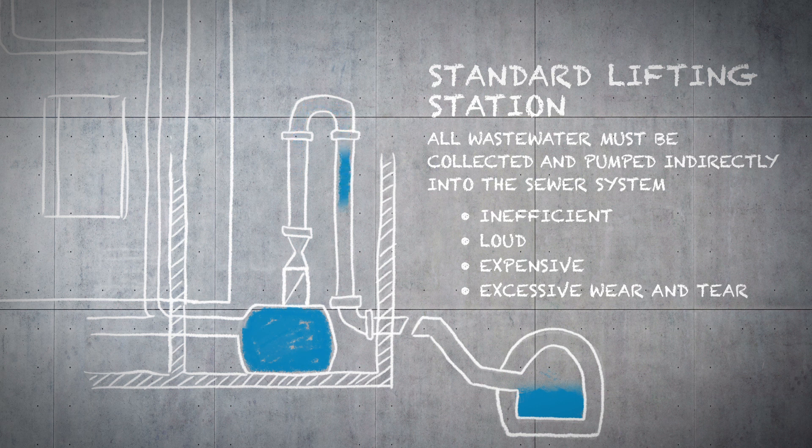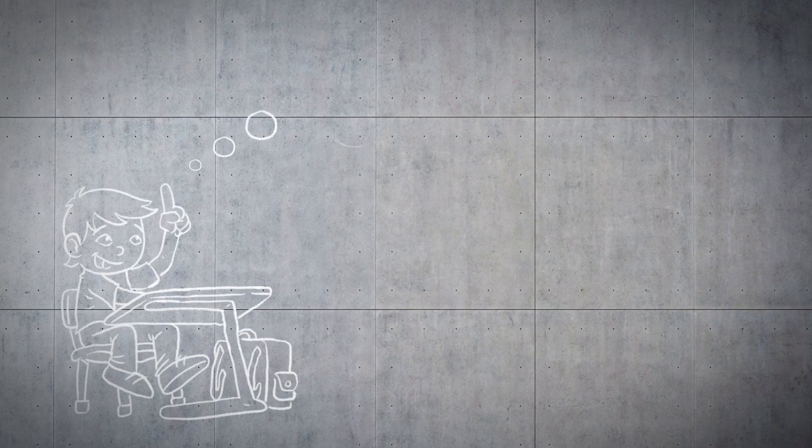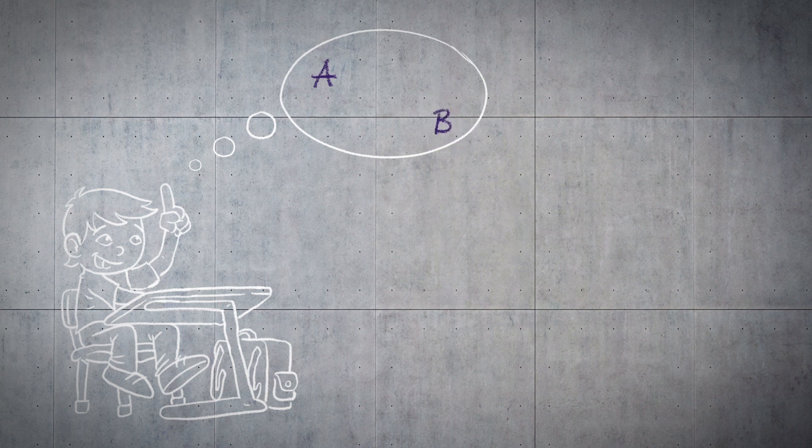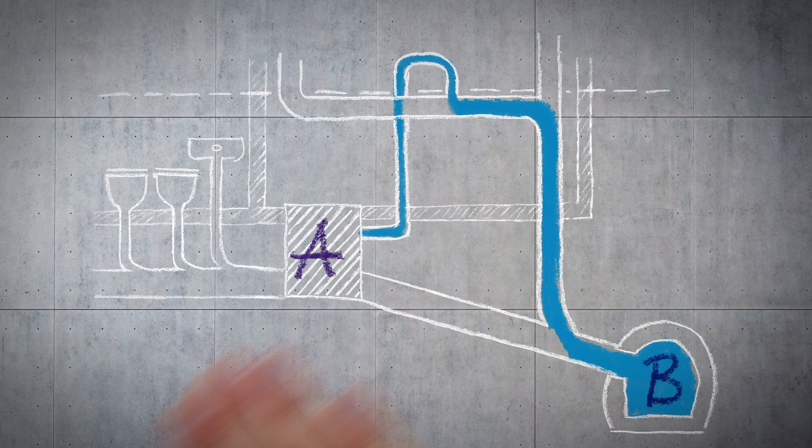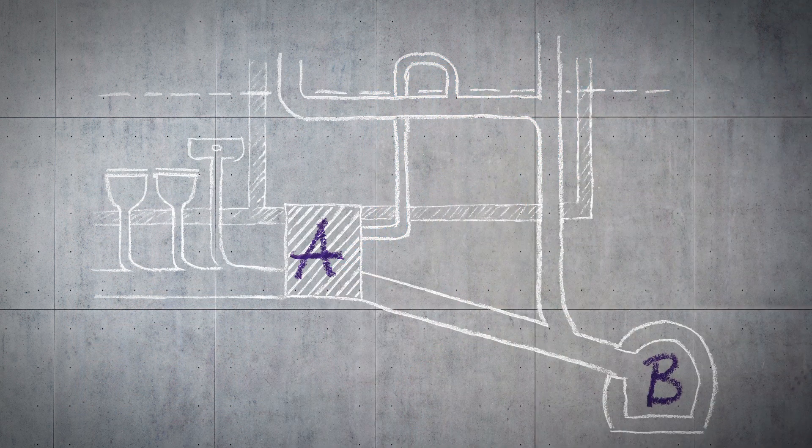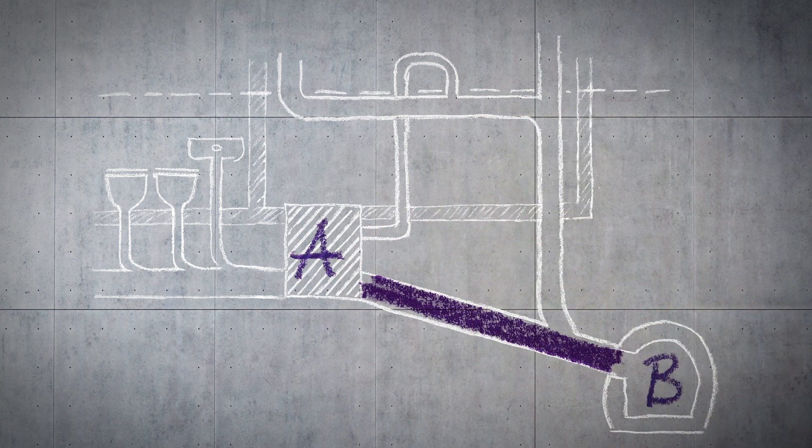But why use a lifting station when gravity drainage is available to the public sewer? Back in school we all learned that the shortest distance between two points A and B is a straight line. But why not use the same straight line, just like you learned in school, when draining wastewater from a building?